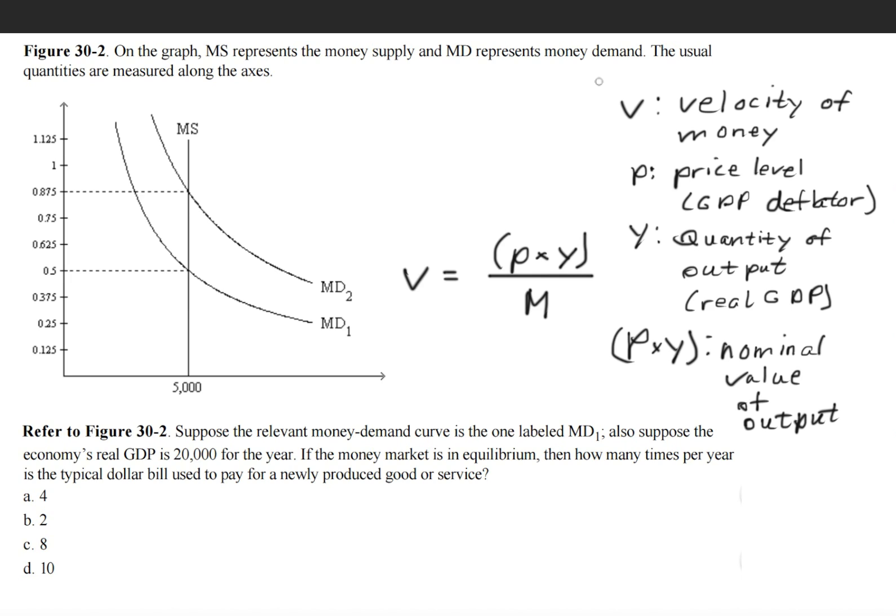And when we multiply P and Y, we get the nominal value of output. So let's see what we've been given. We've been given the real GDP. We're trying to solve for the velocity here. We know the money, the quantity of money.